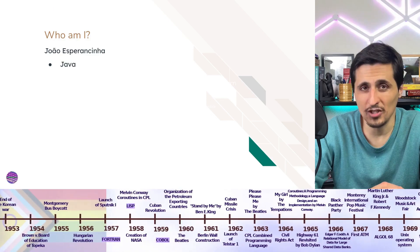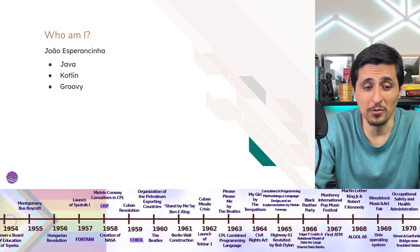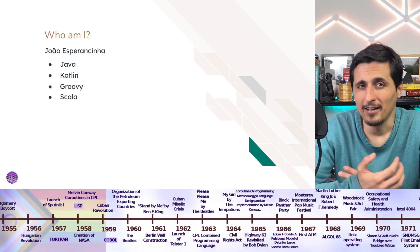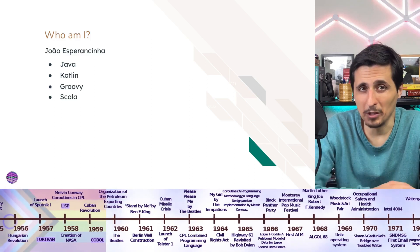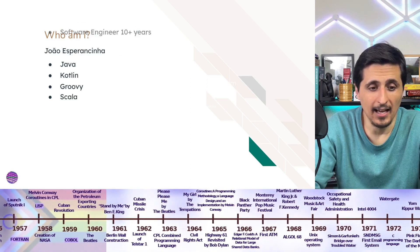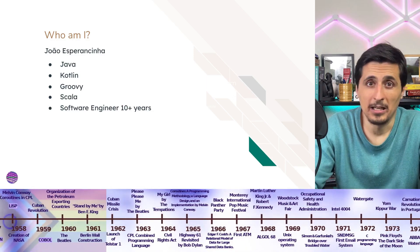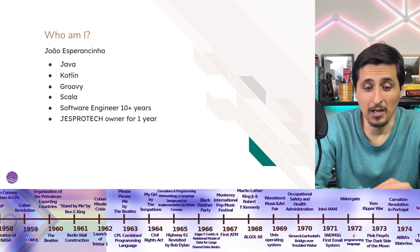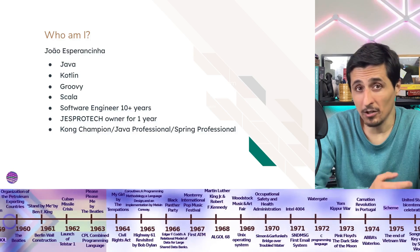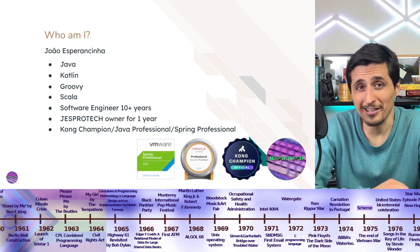I am a Java developer, but also a Kotlin developer, a Groovy developer, and also a Scala developer. I've been mostly a developer in the Java virtual machine world, and I have been doing software for about 10 plus years. I am an owner of this channel for about one year already, and I am a Kotlin champion, a Java professional, and a Spring professional. These are my credentials.